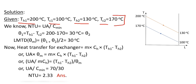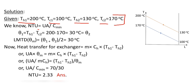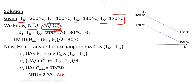We know that the Number of Transfer Units, NTU, is equal to the overall heat transfer coefficient U multiplied by area A, divided by the minimum heat capacity Cmin. In the question, the value of UA divided by Cmin is not directly given, so to find NTU we calculate this value from the given data.